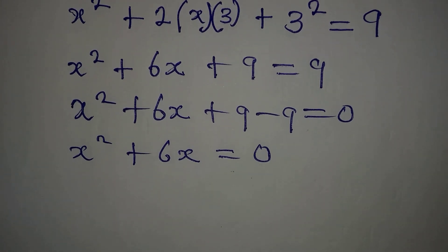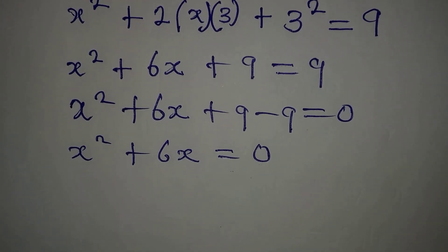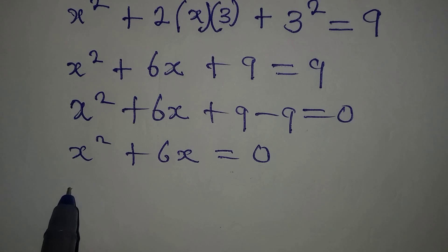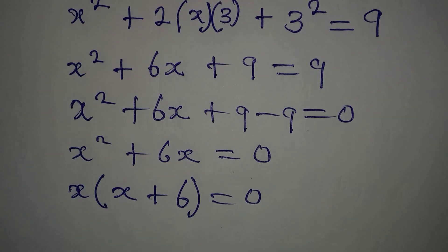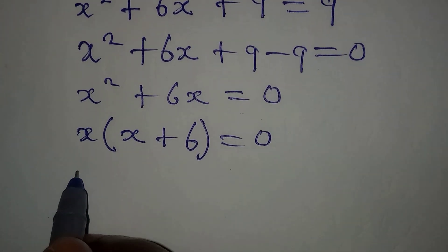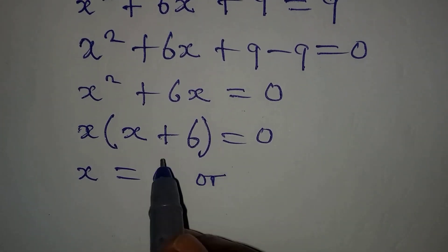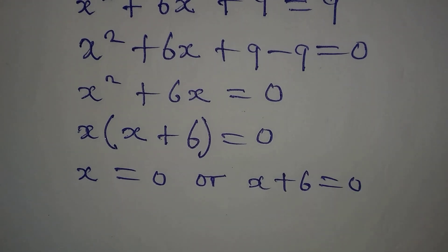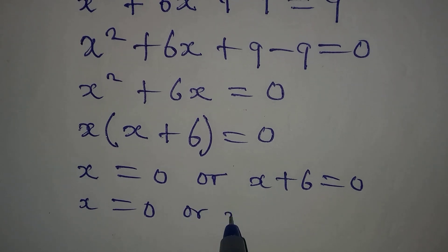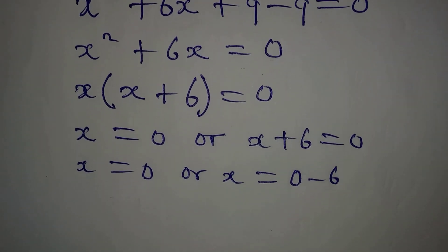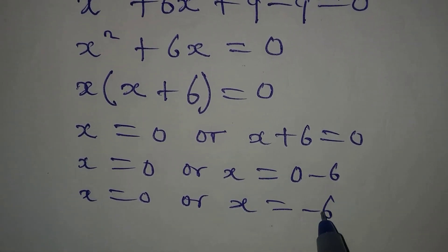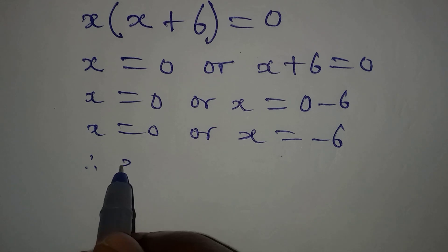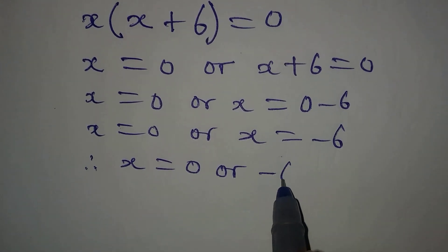To deal with this, we can factorize. When we factorize, x is the common factor, giving us x(x + 6) = 0. From here, either x = 0, or x + 6 = 0. So x = 0, or x = 0 − 6, which is x = −6. Bringing the two solutions together: x = 0 or x = −6.